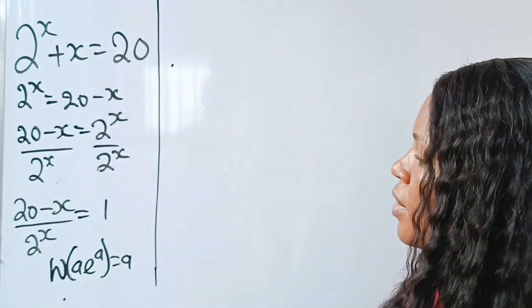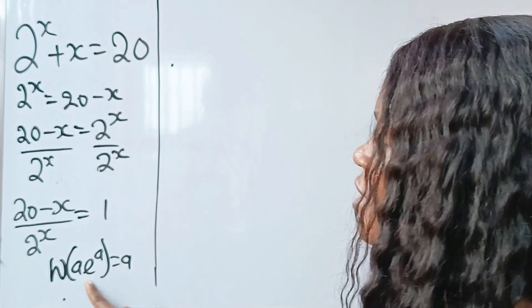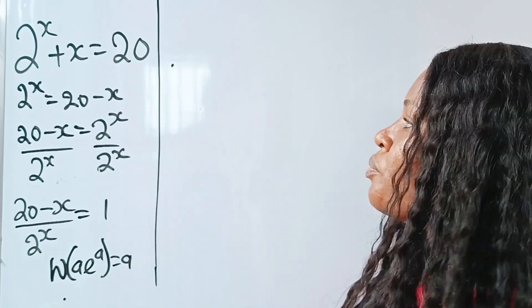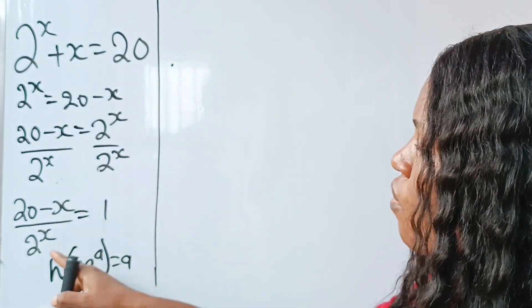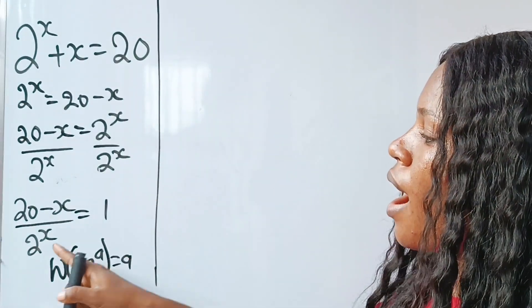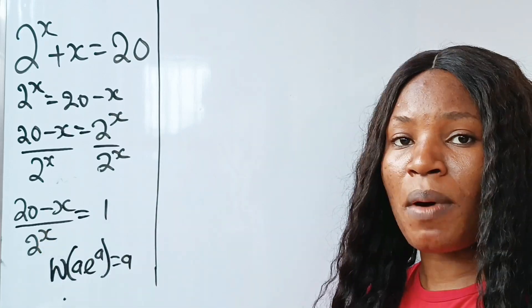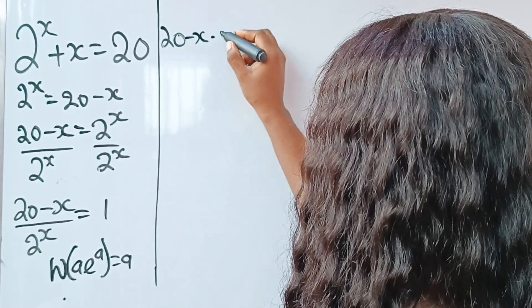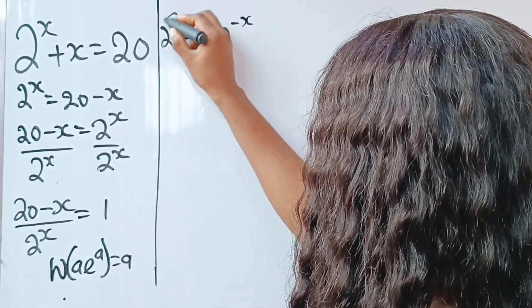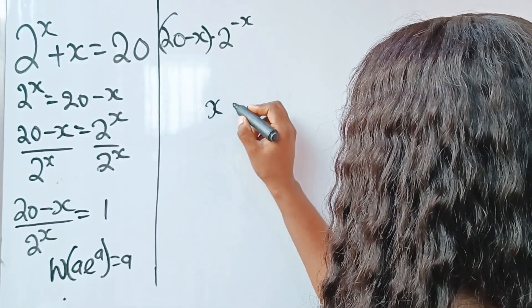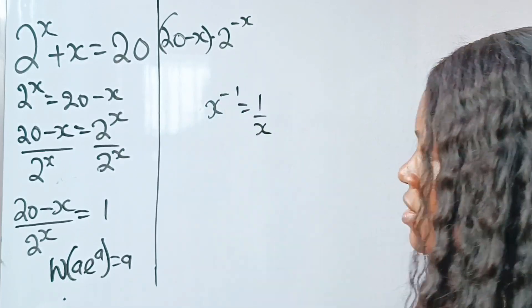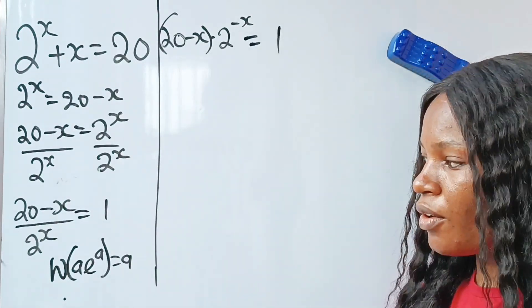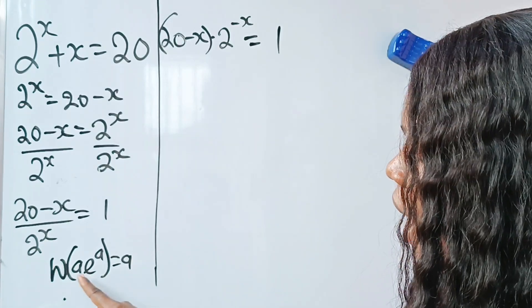Now, looking at our expression, there is a fraction, so the first thing I need to do is take this off so that I have a linear expression. To do that, I bring 1 over 2^x up by introducing a negative sign to its power, so I'm going to have (20 minus x) multiplied by 2 to the power of minus x. This is equal to 1, since x to the power of minus 1 is equal to 1 over x.